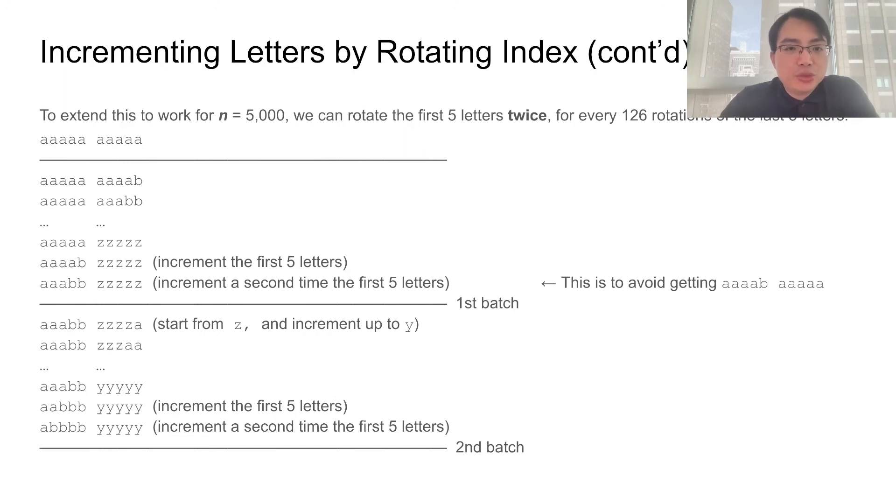Because we need 5,000 words, we will actually do this for two groups of five letters. Let's separate our 10 letters into the first five and the second five. For every 126 rotations of the second group, we will rotate twice the first group.